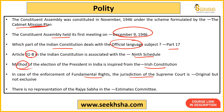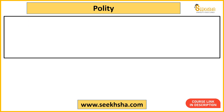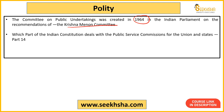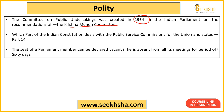There is no representation of Rajya Sabha in the Estimates Committee. The Committee on Public Undertakings was created in 1964 on the recommendation of the Krishna Menon Committee. Part 14 of the Indian Constitution deals with Public Service Commissions, whether Union or State. The seat of a Parliament member can be declared vacant if that person is absent from all meetings for a period of 60 days without giving notice or sufficient reason.